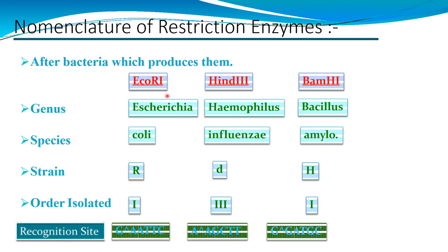HindIII was isolated from Haemophilus influenzae: H from the genus, 'in' from the species, 'd' from the strain, and III because it was the third enzyme isolated. BamHI was isolated from Bacillus amyloliquefaciens: B from the genus, 'am' from the species, H from the strain, and I from the order of isolation.